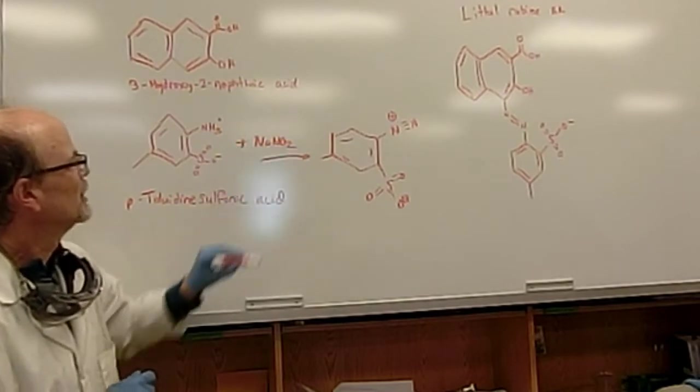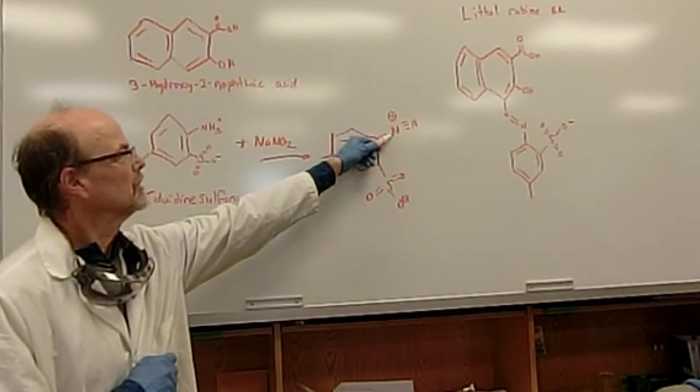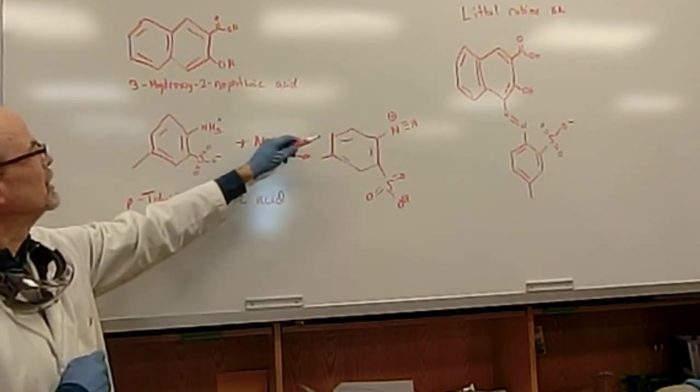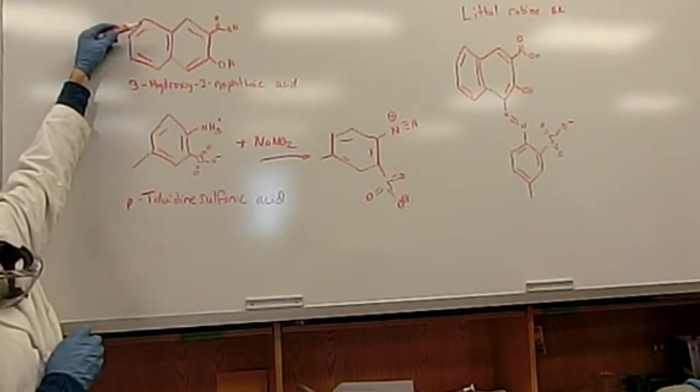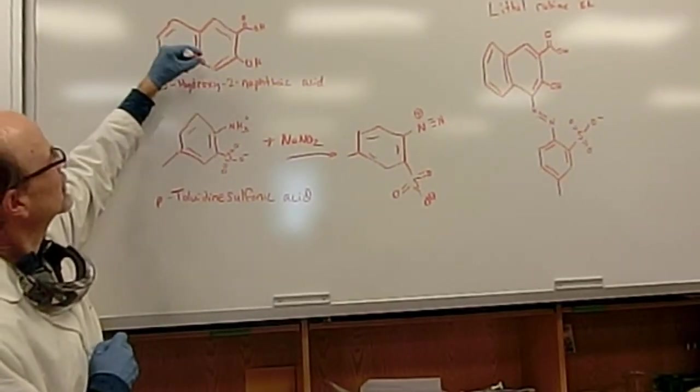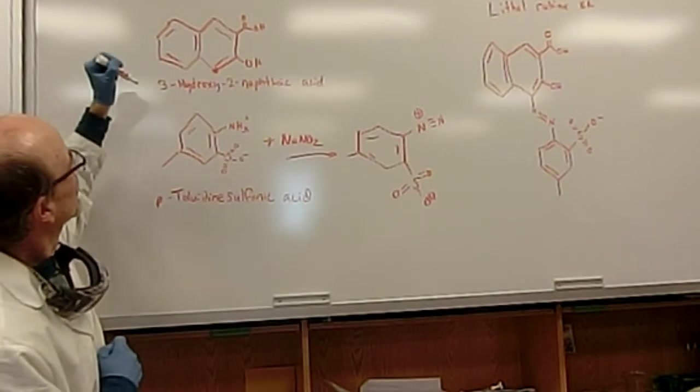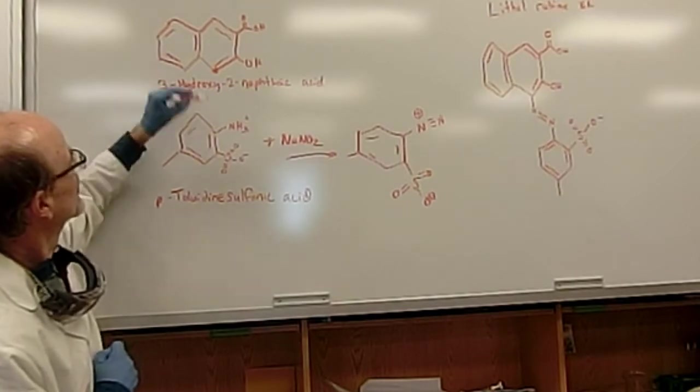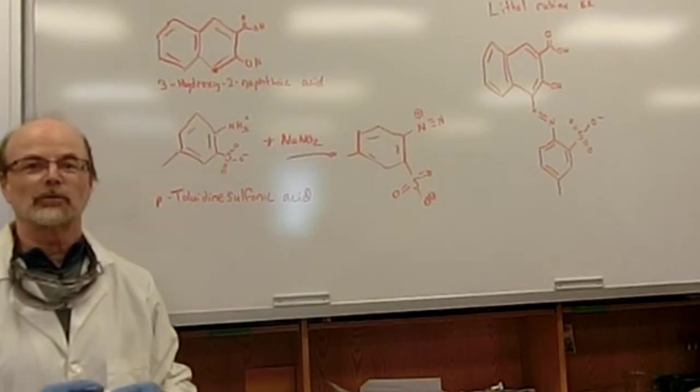So this will be step one. Once this is generated, we keep this at zero degrees to keep this from decomposing into nitrogen gas. We then will add it to naphthylic acid, and it should undergo an electrophilic aromatic substitution ortho to the para director. So it should land right here, and that will form our dye.